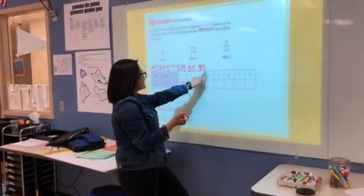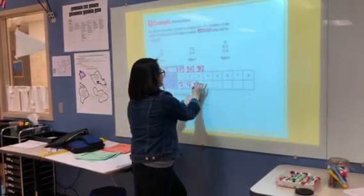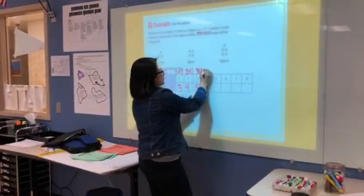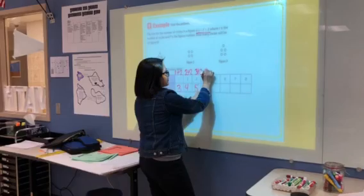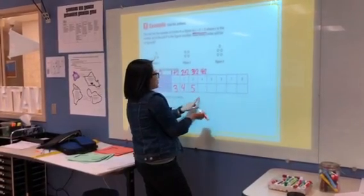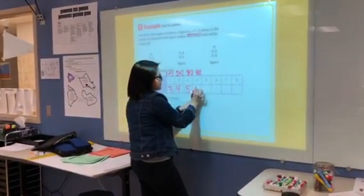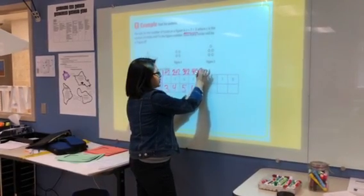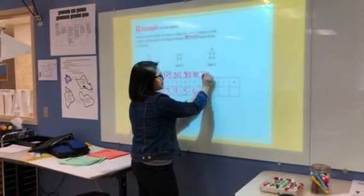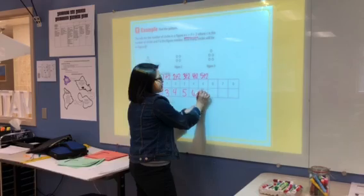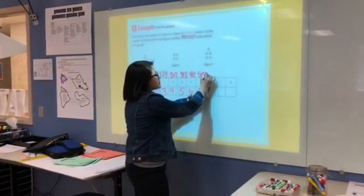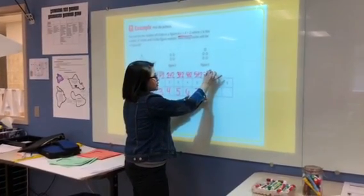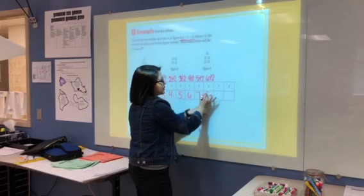So 3 plus 2, and that's going to give us 5. And then we put 4 plus 2, which that will give us 6. 5 plus 2, which will give us 7. 6 plus 2, and we get 8.